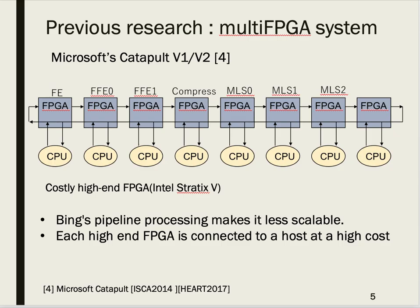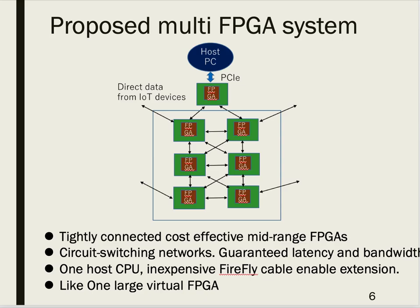Another conventional Multi-FPGA system is Microsoft Catapult, which is specific to search systems. Its pipeline processing makes it less scalable, and each FPGA is a high-end FPGA connected to a host, making this system costly.